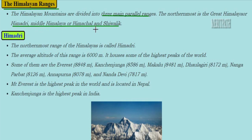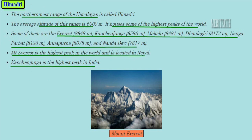The Himalayan ranges are divided into three parallel ranges: the northernmost is the Greater Himalaya or Himadri, followed by the Middle Himalaya or Himachal, and then the Shivalik range. The Himadri has an altitude of 6000 meters and includes some of the world's highest peaks: Everest, Kanchenjunga, Makalu, Daulagiri, Nanga Parbat, Annapurna, and Nanda Devi. Mount Everest is the highest peak in the world, located in Nepal, while Kanchenjunga is the highest peak in India.